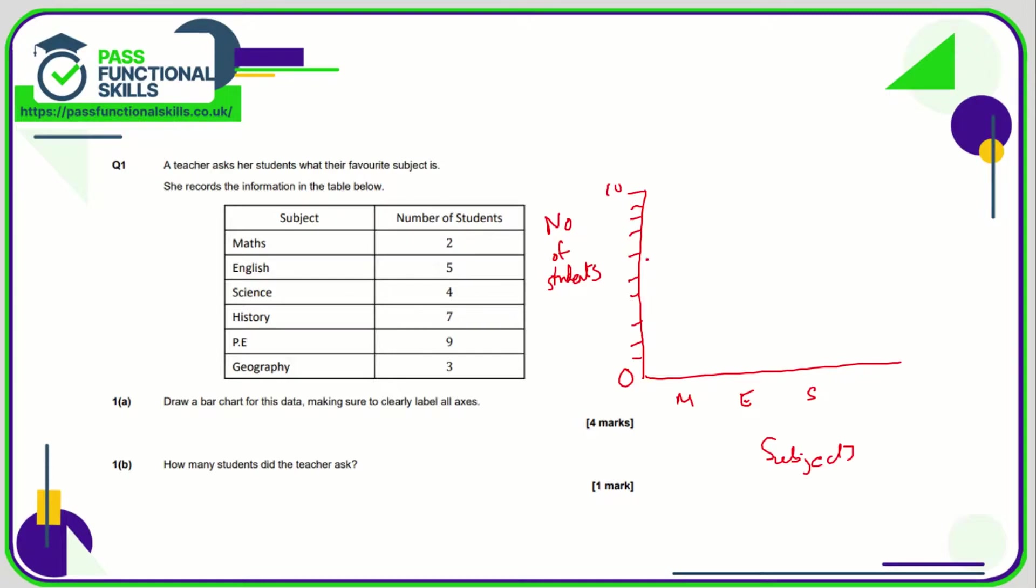Obviously these should be evenly spaced, which they're not. You'd be doing this with more care and attention, perhaps on graph paper. The key thing is the bars need to all be equally spaced and of equal widths. Maths needs to go up to two, English to five, science to four, history to seven, PE to nine, geography to three. PE should be the tallest and maths the shortest.